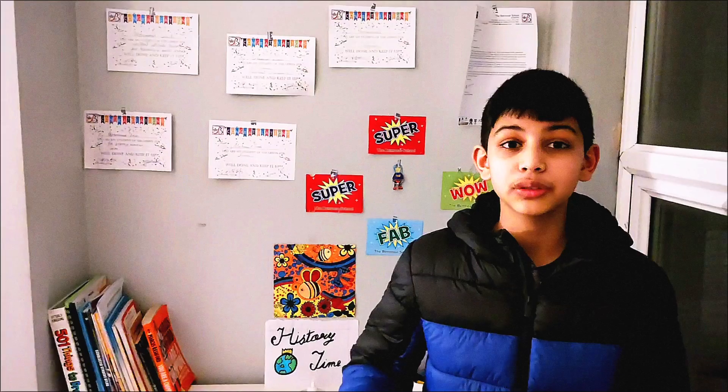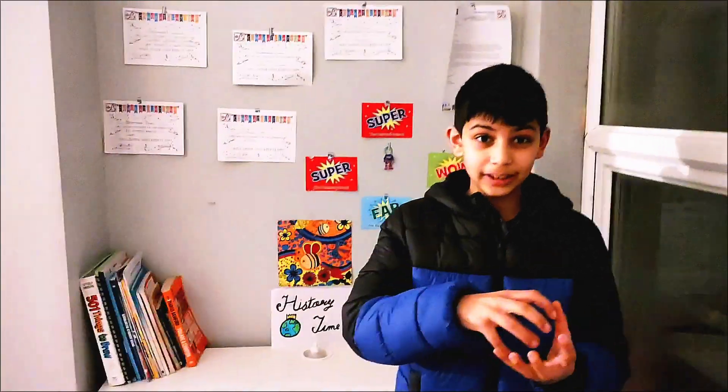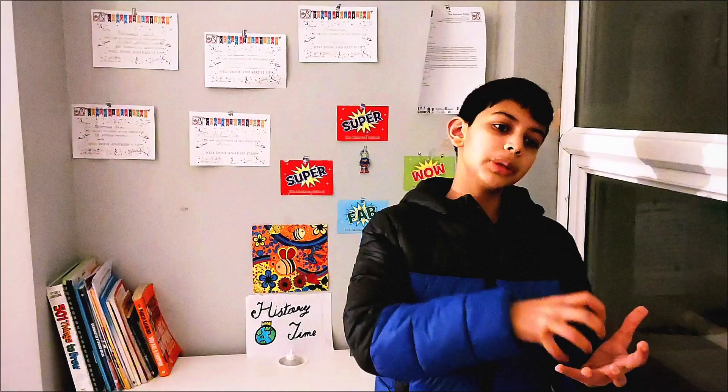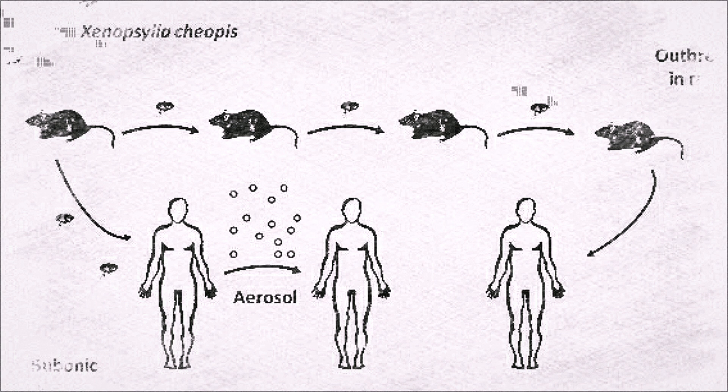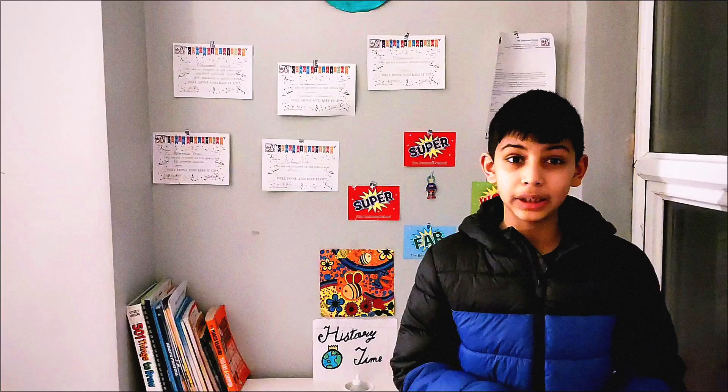The disease came from rats that had the plague. The reason the rats made people infected was fleas. Fleas are beetle-like insects that jump from animal to animal and sometimes onto people, sucking their blood. These fleas went from rats, sucked their blood, then jumped to a human body and sucked their blood, transferring all the virus particles into the human body.